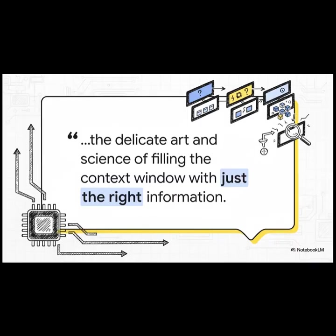And who better to kick us off than Andre Karpathy? He calls it the delicate art and science of filling the context window with just the right information. That phrase, 'just the right information,' is everything. This isn't about just stuffing the AI with data. It's about being incredibly smart and incredibly selective about what it's thinking about at any given moment.